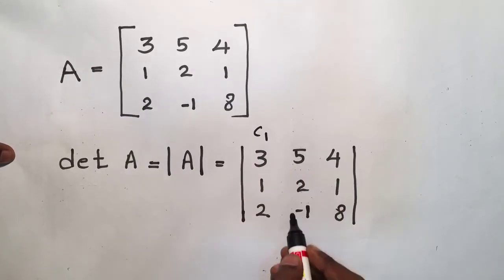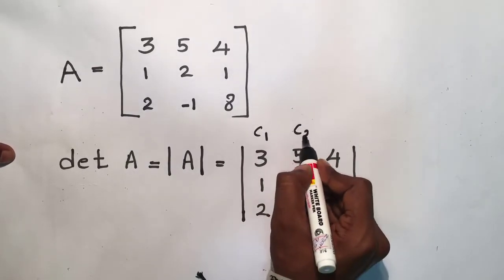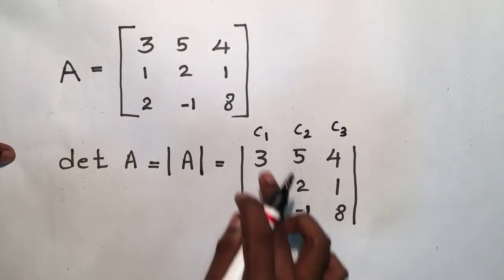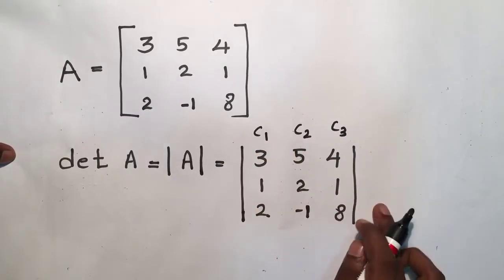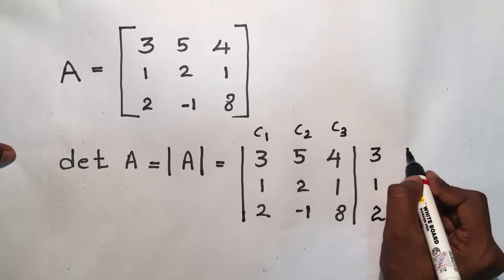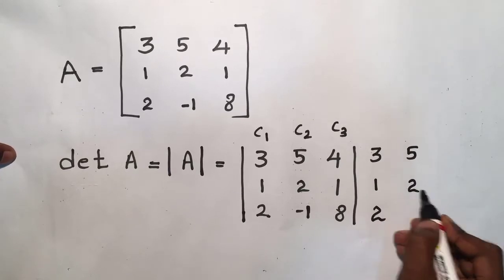This is the first column, C1. This is the second column, C2. And finally, the third column is C3. Now I'm going to rewrite the first and second columns: 3, 1, 2, and the second column is 5, 2, and -1.